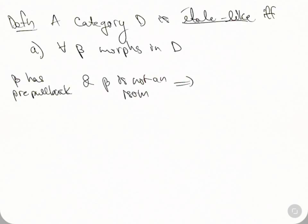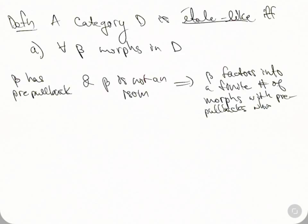then this implies that beta factors into a finite number of morphisms with pre-pullbacks which are irreducible. It's a factorization theorem. That's condition A. And then B, the thing that says is that for all A in the category,